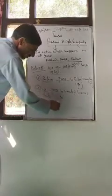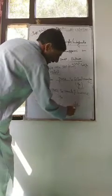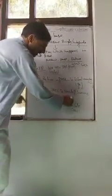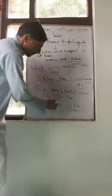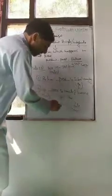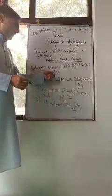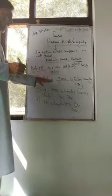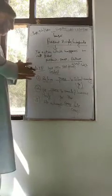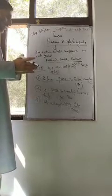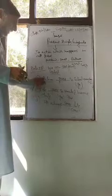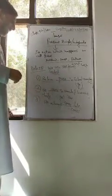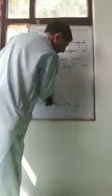Third example: 'He always ___ late.' The verb here is 'come'. If you use 'come', it is wrong because the sentence begins with 'he', which is third person singular. So the correct form is 'comes'. 'He always comes late' — this shows habit. You must be careful: use the singular form of the verb with the third person singular, and the plural form otherwise.